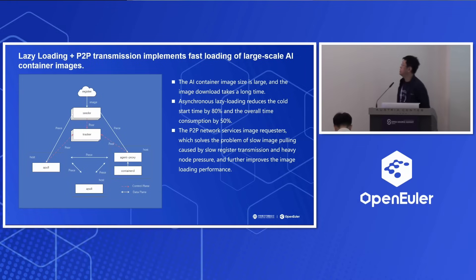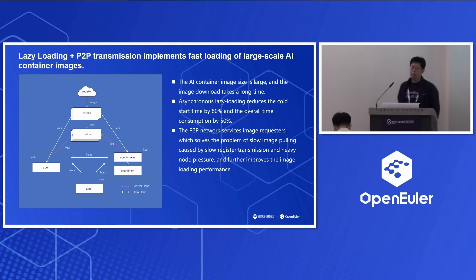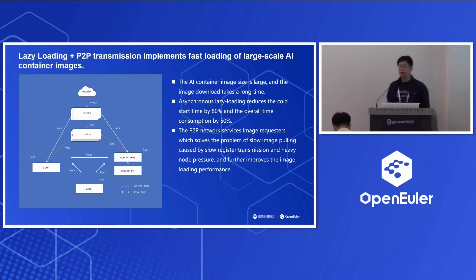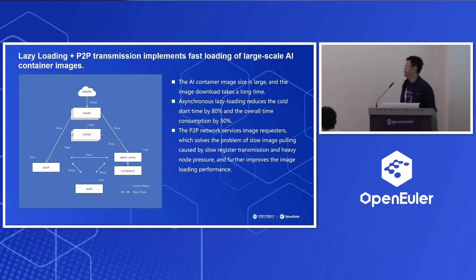Another technology is we utilize peer-to-peer technology, using multiple peers to speed up the transmission. This can resolve the problem of a slow registry — for example, when the registry node stress is heavy and causes slow image loading. This P2P transmission can resolve this kind of problem and improve the image loading and booting.